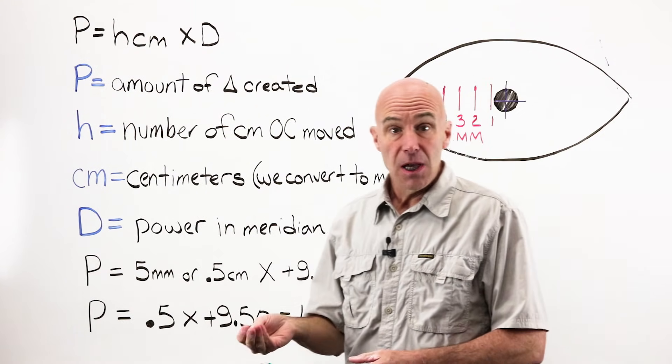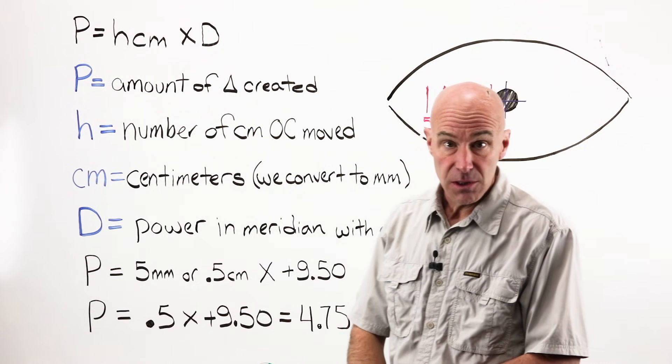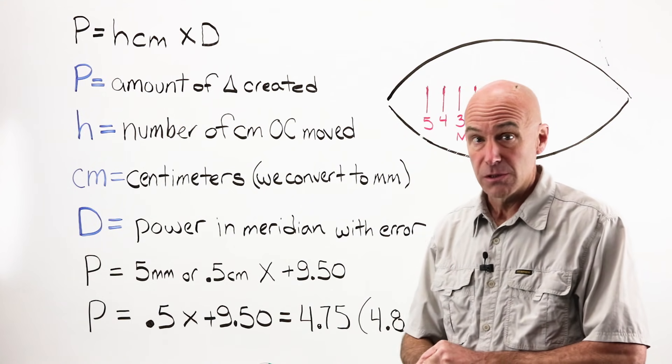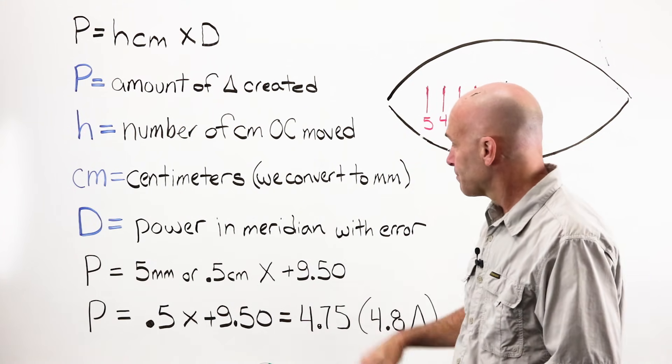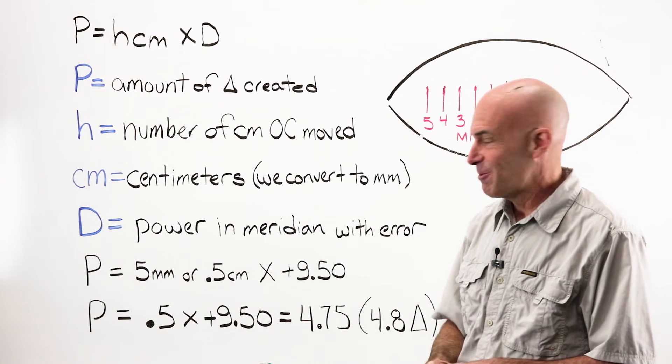The three examples that we're going to work are going to be very basic. We're not going to be using 30, 45, 60 or the powers in oblique meridians formula for the first three. This doesn't come into play quite so much. Wait until the next one.